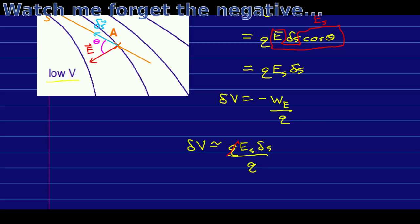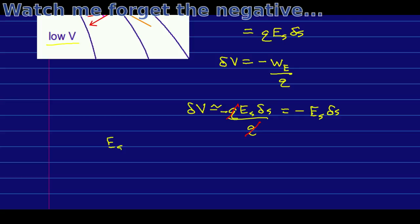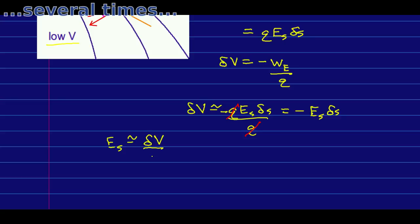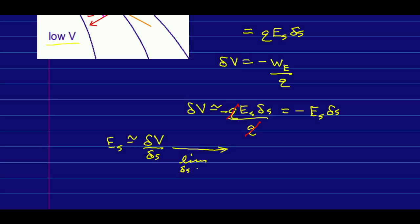And so, as always, the charge, we're thinking of this as a probe charge, has to cancel out. Well, this tells us that our S component of the E field is approximately negative delta V over delta S. But now if I take the limit as delta S goes to zero, this is going to become precise. And I just see that the S component of the E field is negative dV by dS.